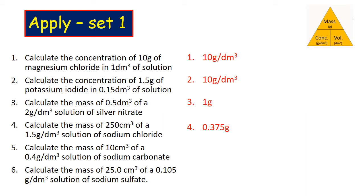Number five: Calculate the mass of 10 cm³ of a 0.4 g/dm³ solution of sodium carbonate. And you should get 0.004 grams.